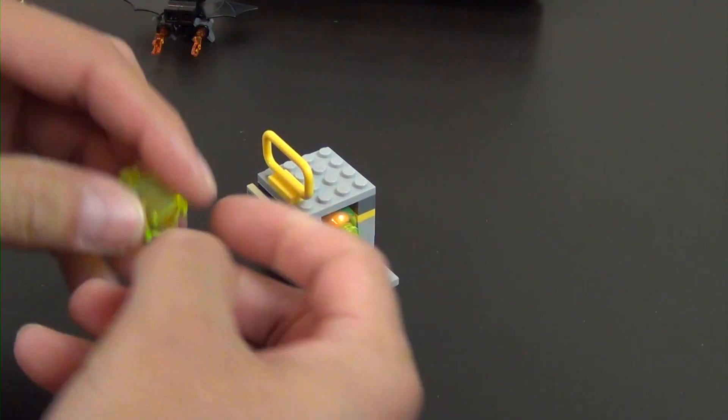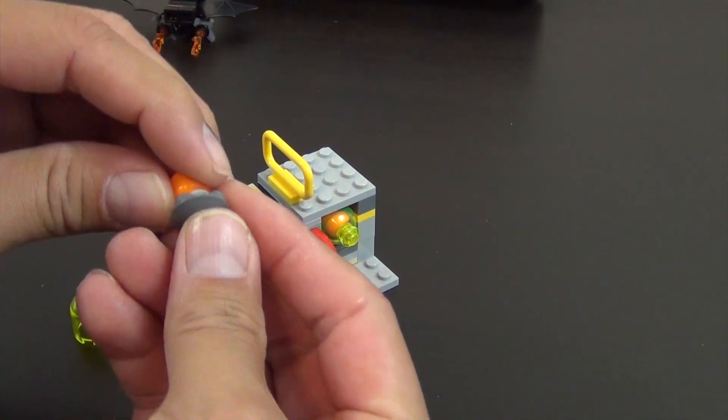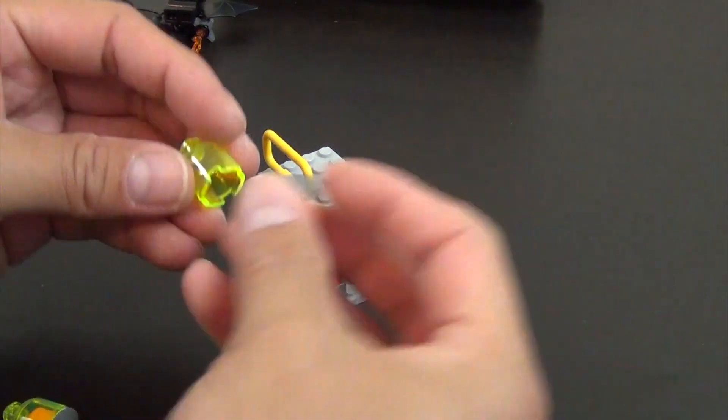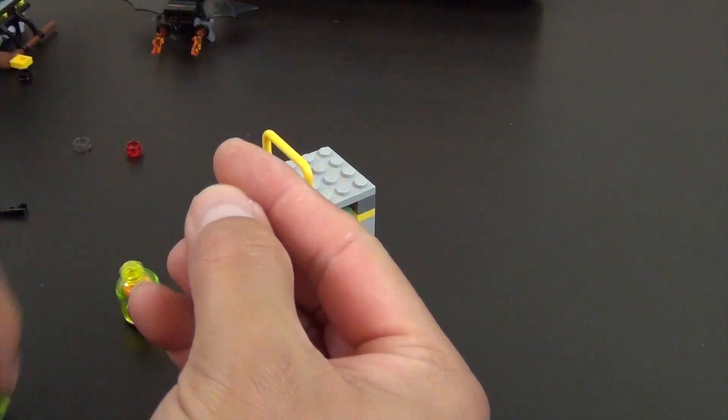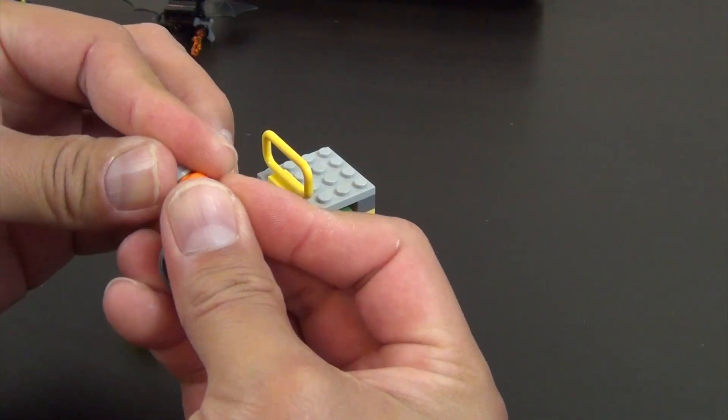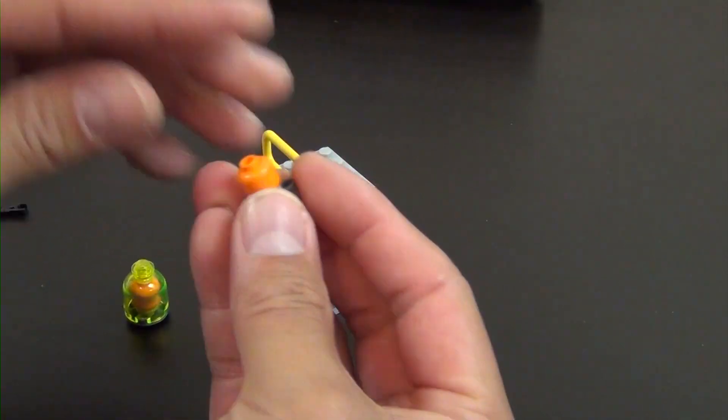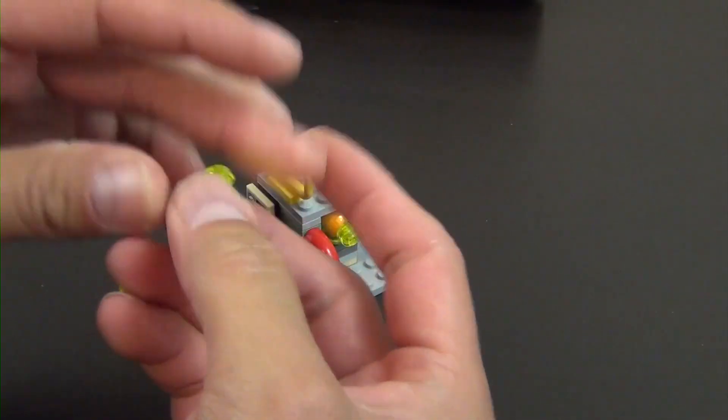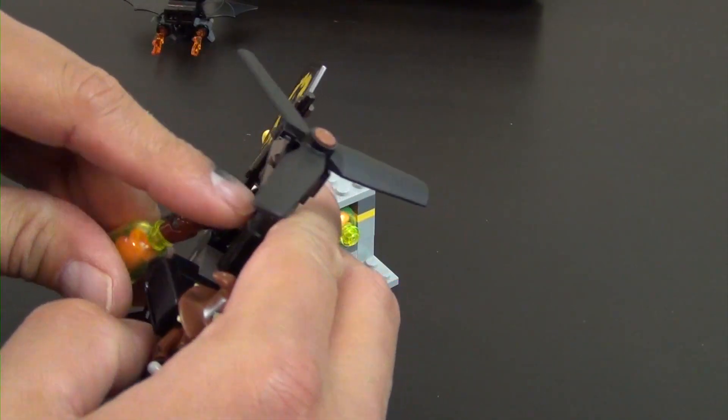And I did notice when I built this last one that I did forget to put on a stud on the bottom side of each one of these. Now, you notice it really didn't matter as far as the construction of it. It's still held together, but what that stud does is it allows that orange minifigure head to appear a little bit taller than it is. Okay, so there it is.